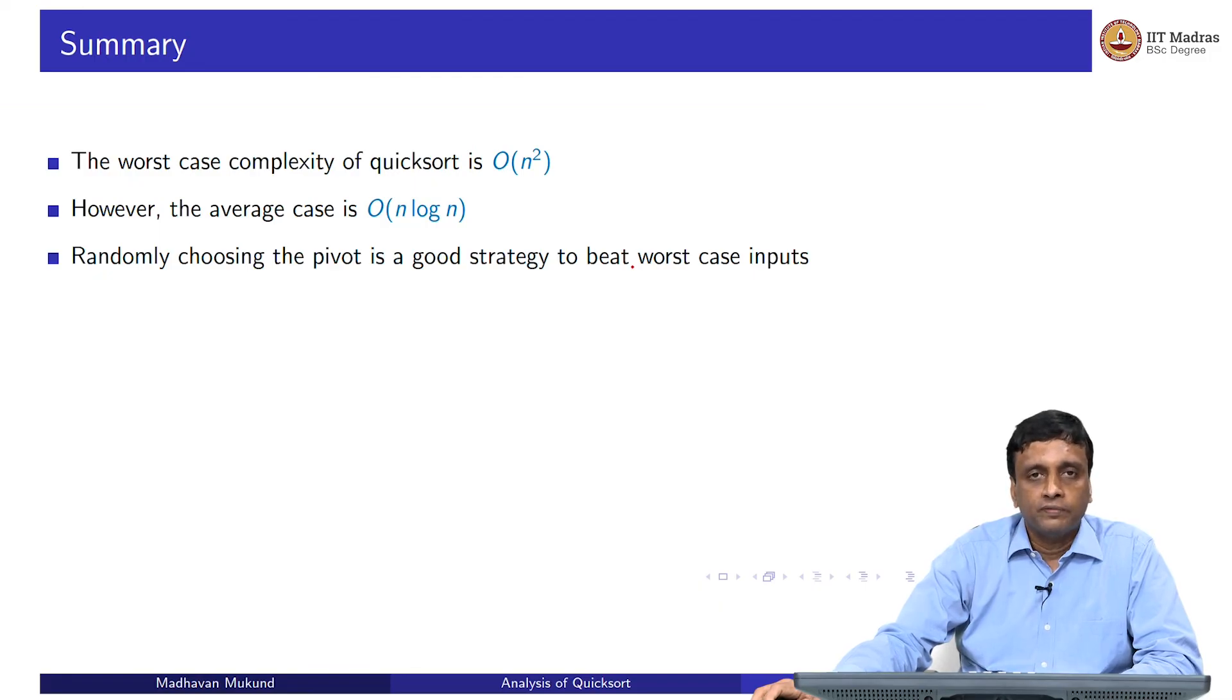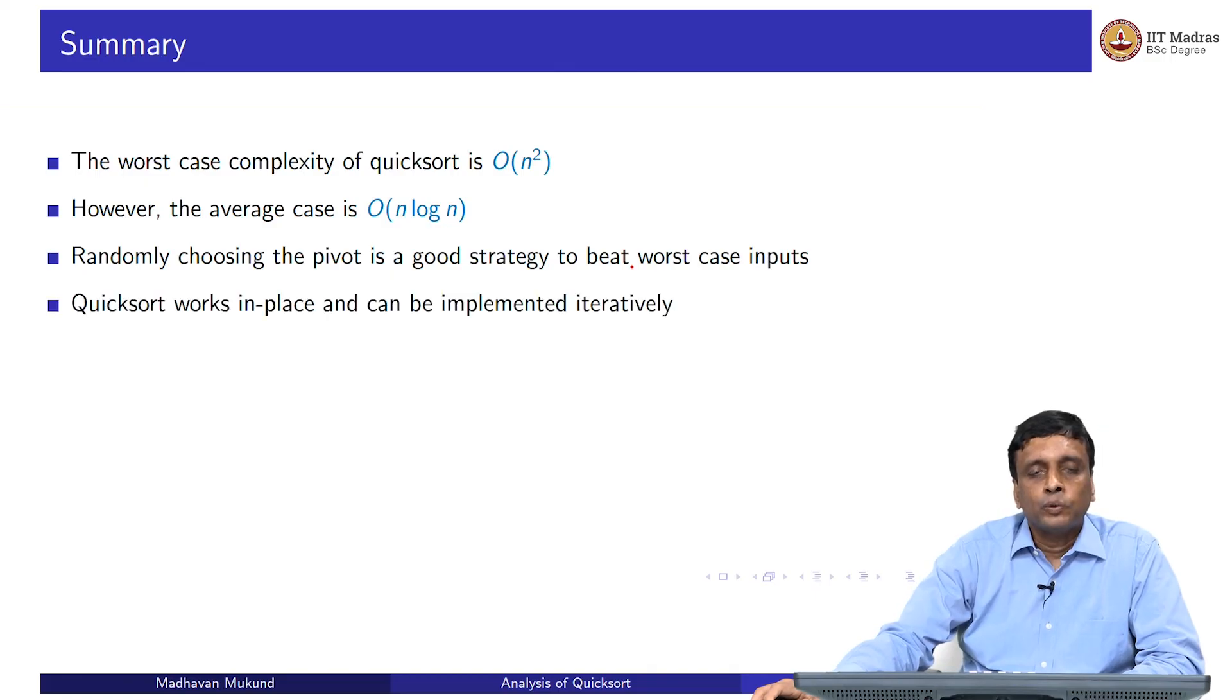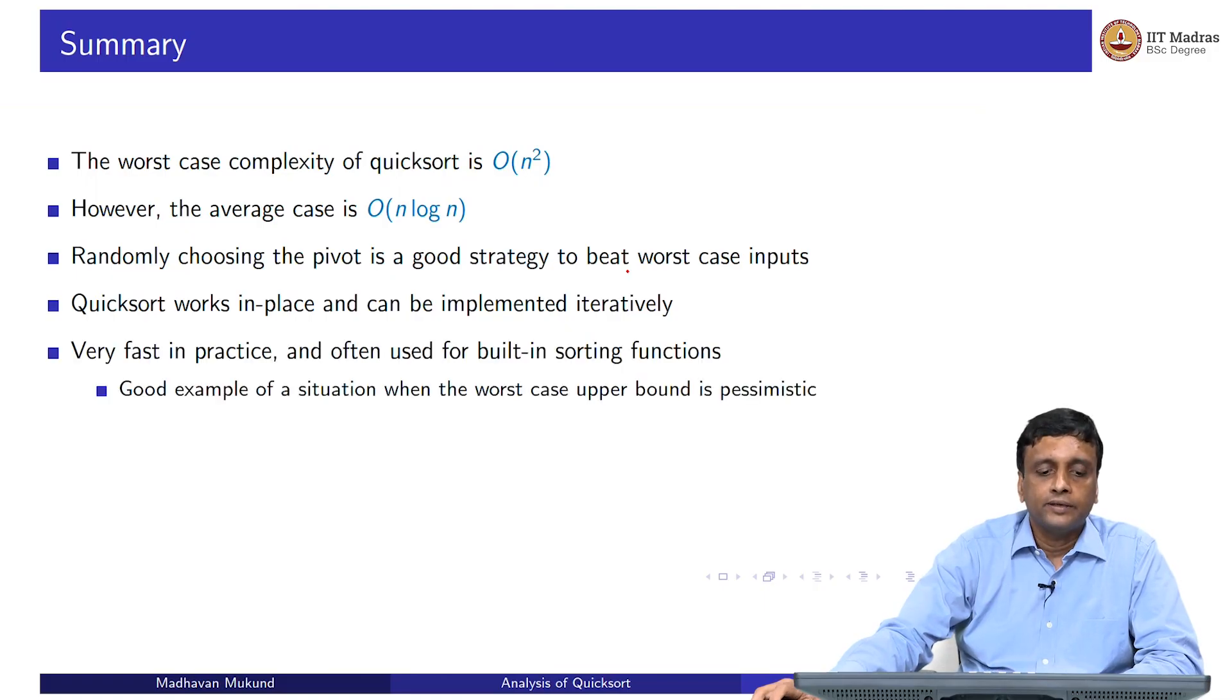Each time you want to pivot, you pick a position with uniform probability between the beginning and the end. Quicksort overcomes some of the limitations of merge sort in that it works in place, does not require you to construct a new array, and can be implemented iteratively.